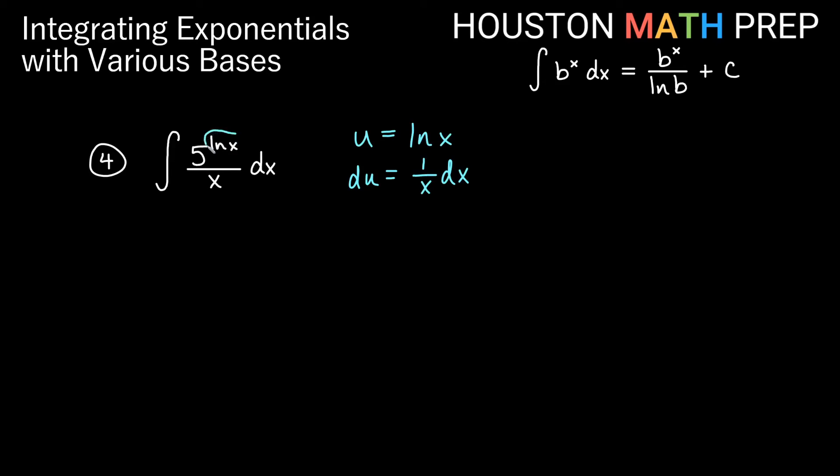Now let's look back and see if this works. 5 to the ln x, this ln x becomes u. We chose that on purpose. And now this 1 over x dx, do you see it here? This dx out here and this x on the bottom, that's actually 1 over x dx. So this is actually du. So then this will give us just the integral of 5 to the u du.